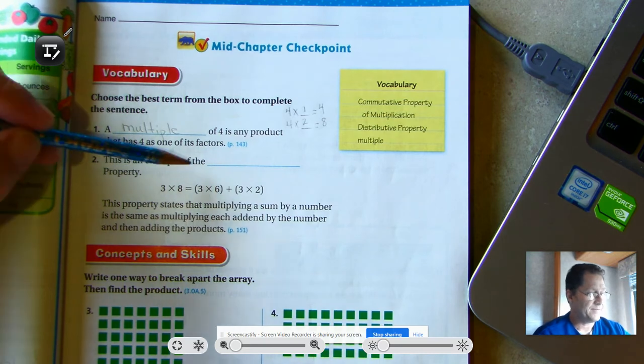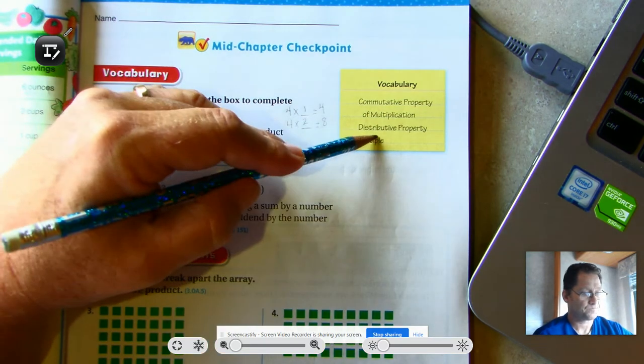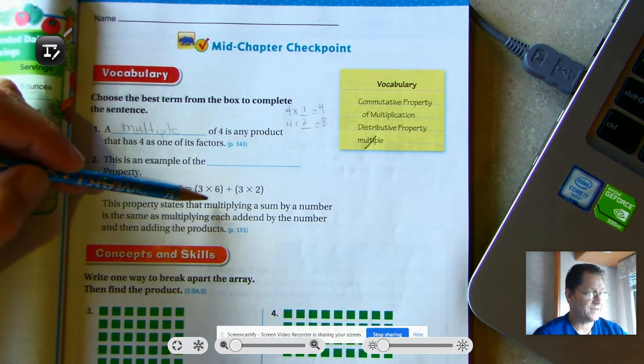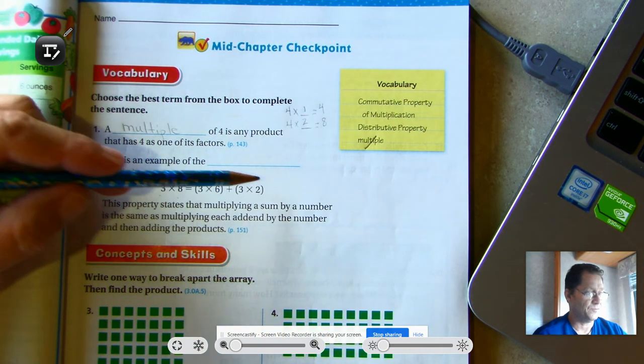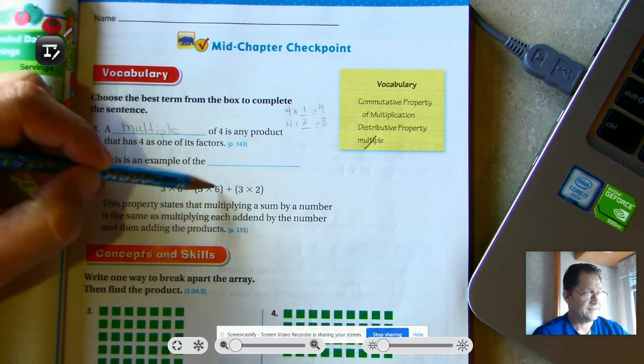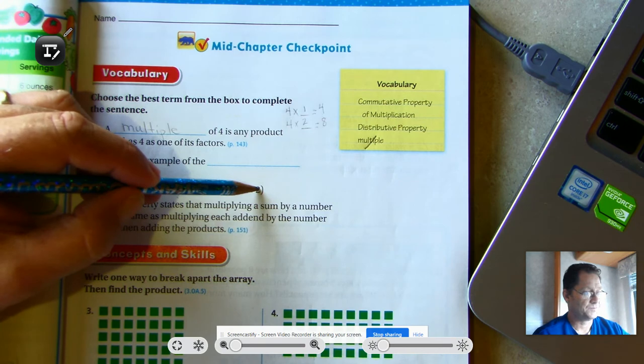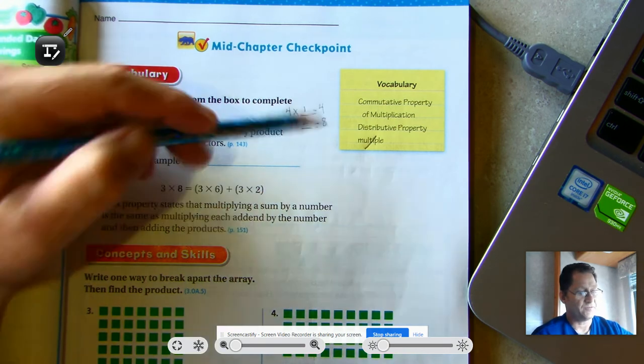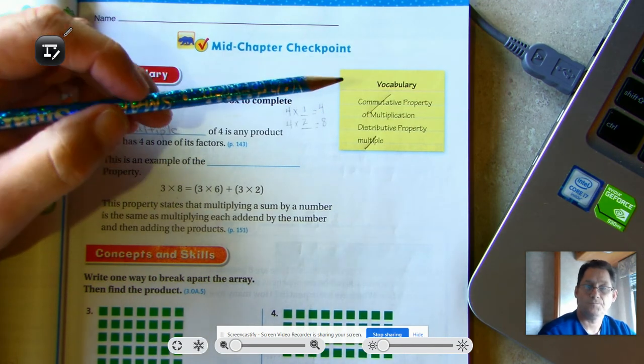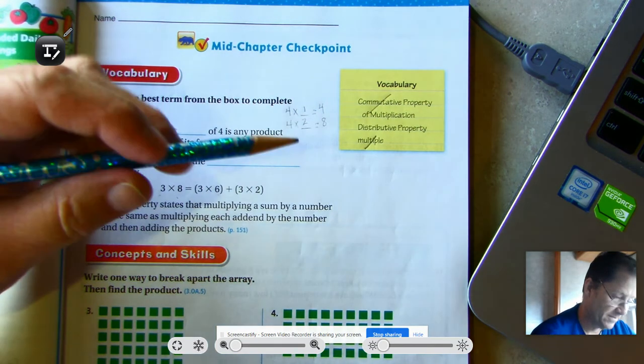This is an example of the blank property. Three times eight equals three times six plus three times two. So we see that they broke up the eight into six plus two. That's not commutative property. Commutative property is where you use the same factors but in different order.